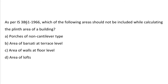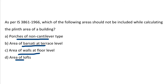Next question: as per IS 3861:1966, which of the following area should not be included while calculating the plinth area of the building? Option A: Porch of non-native type. Option B: Area of verandah at terrace level. Option C: Area of walls at the floor level. Option D: Area of lofts. The correct answer is option D, Area of lofts.